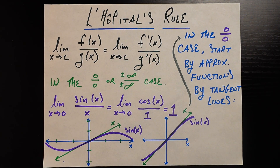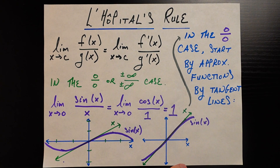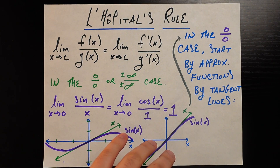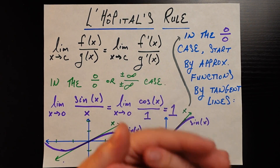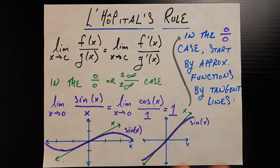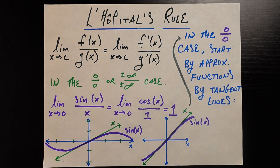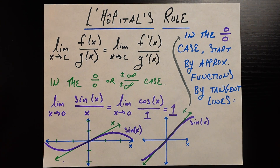My experience with L'Hôpital's rule is that it's this seemingly magical rule that you can just throw at limit problems in calculus when they're not working out the way you want them to. Some kid in class yells L'Hôpital's rule, you use this rule on a couple tests to solve a couple problems, and then you proceed to never think about it again. But I do want to think about it again, and the reason is that I just found myself thinking this is such an elegant, magical rule — but at the same time, why should it be true?